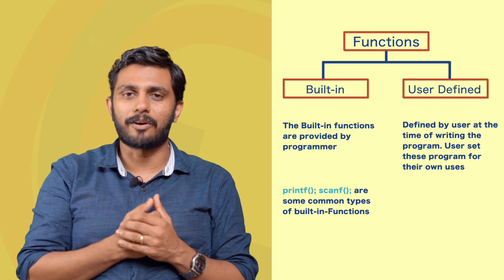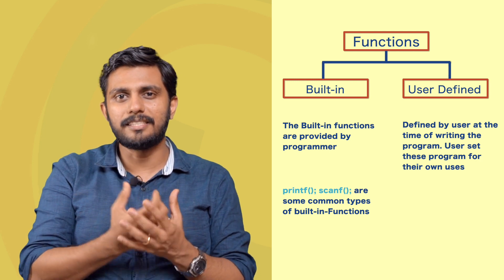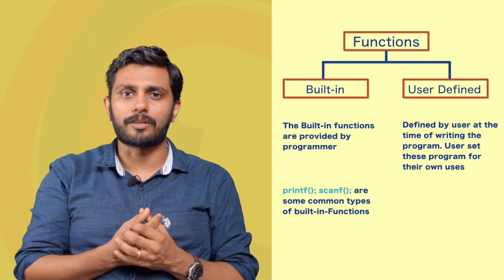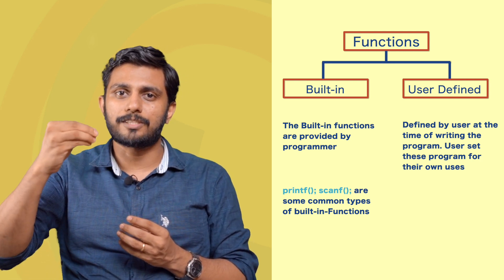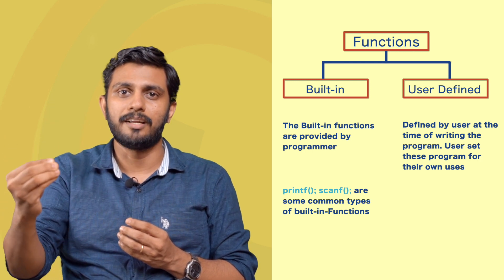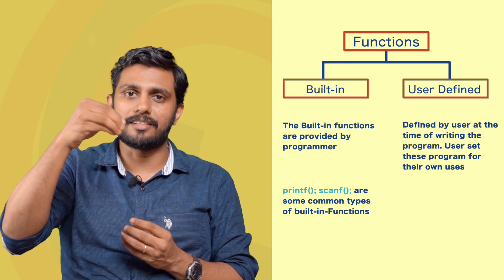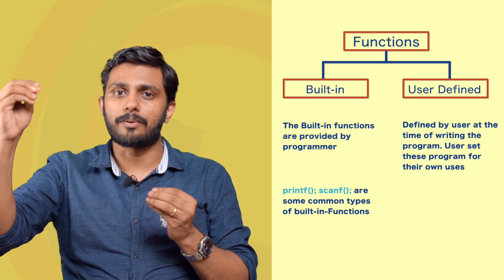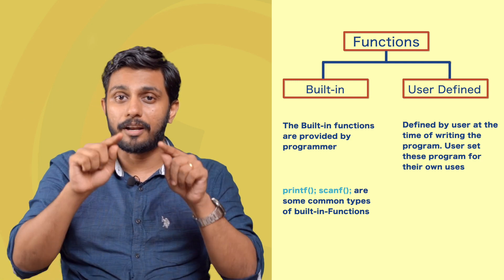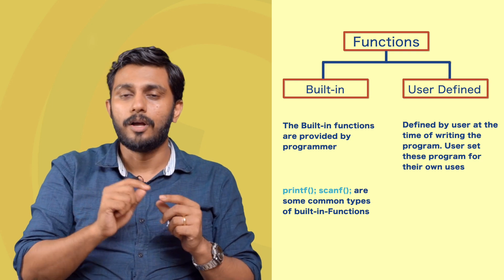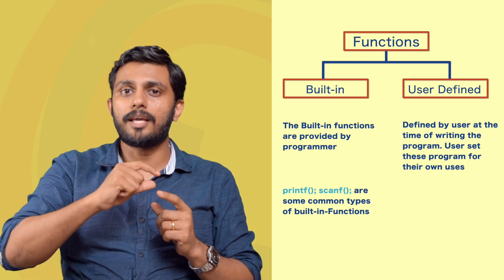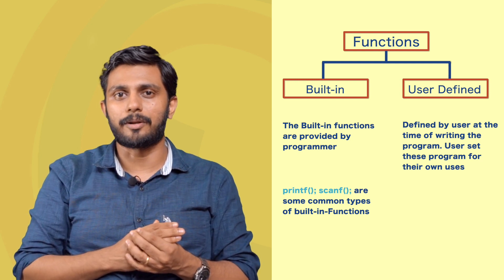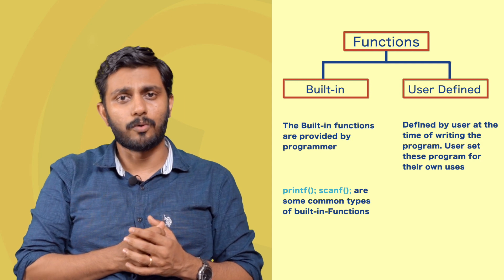In C programming, we have done a few inbuilt functions. For example, when we include the hash include stdio.h header file, we use the printf function. We have function statements and function calls. The stdio.h header file provides these inbuilt functions — they are called inbuilt functions.